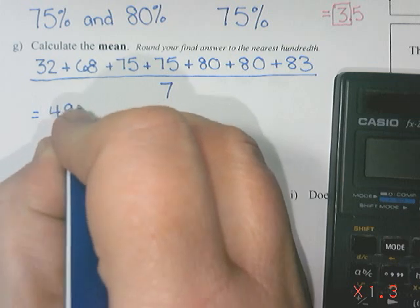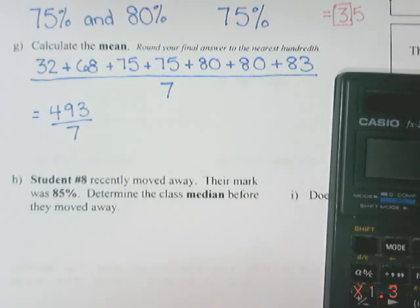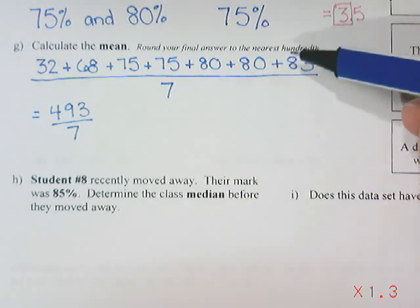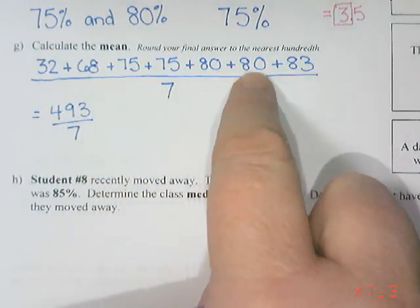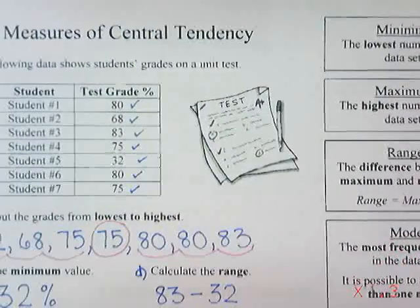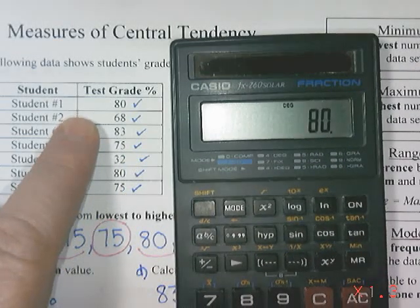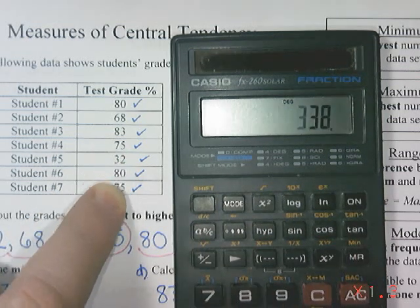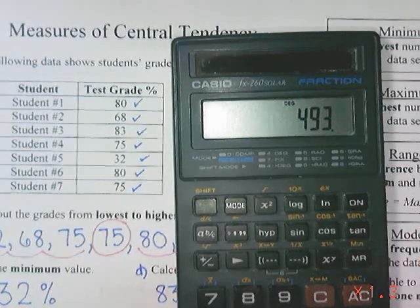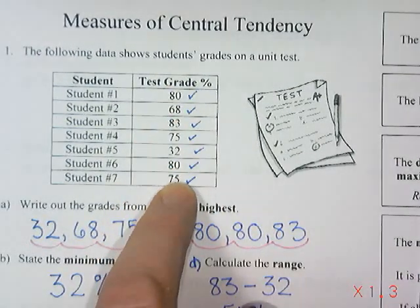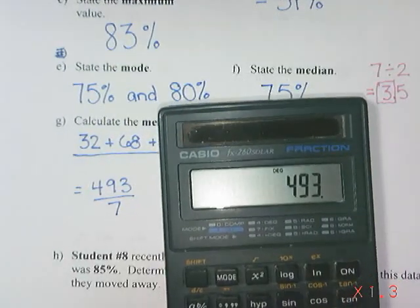So we have 493 divided by 7. I want to point out that if this were a long list of numbers, or a test or quiz, I would first add the numbers written in order from lowest to highest, then go back to my original list and add those too, just to make sure I didn't type something incorrectly or miss a number. Both times I got 493, so I feel good about that.